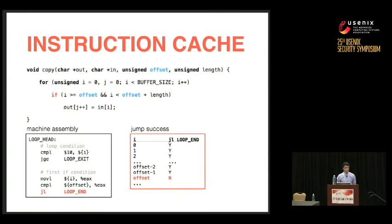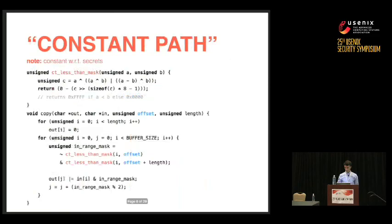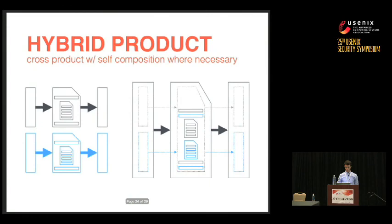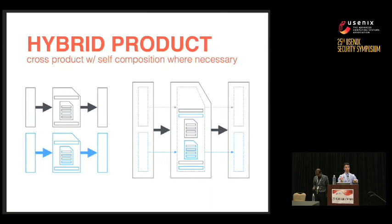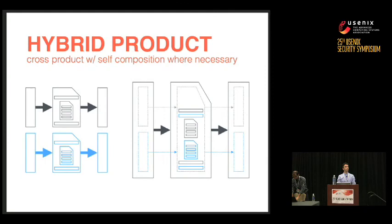Q&A (Deepak): In the hybrid construction, you must know which control flow points are secret-dependent. The speaker confirms this is correct. For most of the analyzed libraries, it never arises. For the one or two examples that do need it, the secret-dependent control points were identified manually. In general, one could try the cross-product proof first, and if it fails, automatically identify divergence points — a possible automation loop — but currently this is done manually.